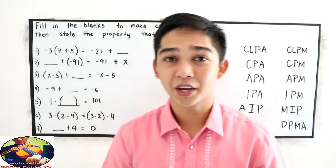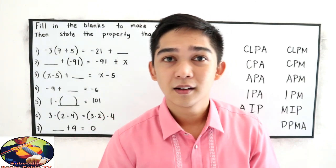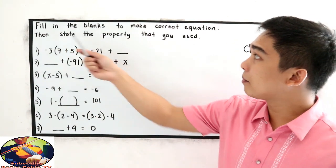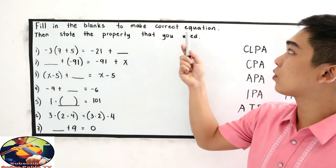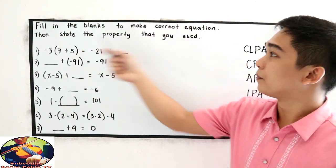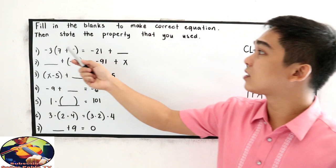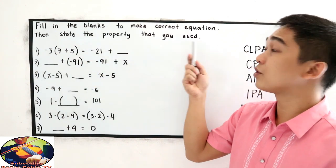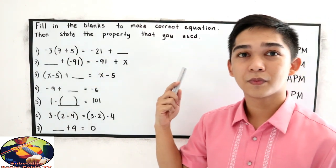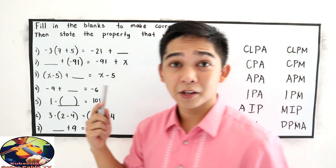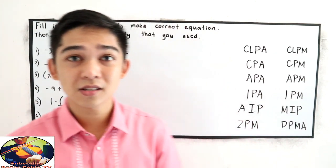So we have here: fill in the blanks to make a correct equation, then state the property that you use. So we have different properties.